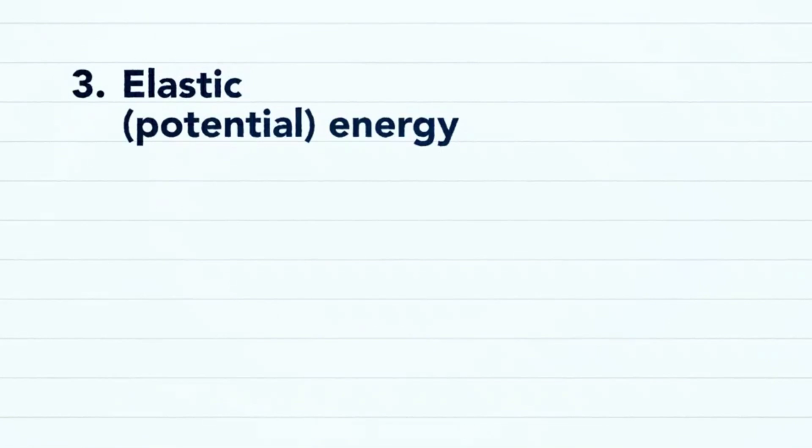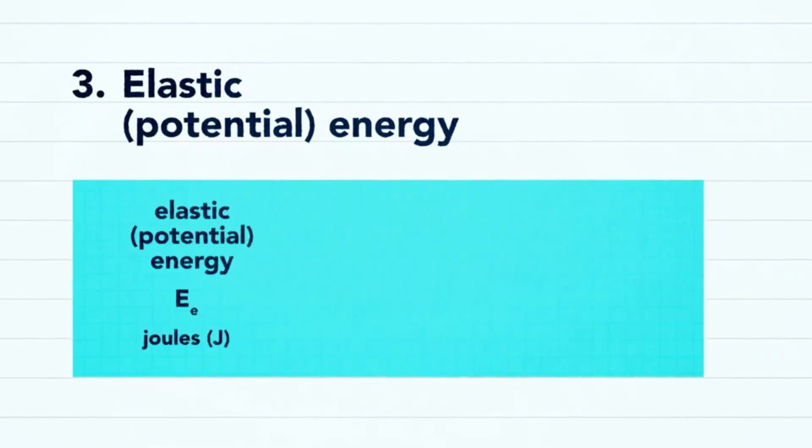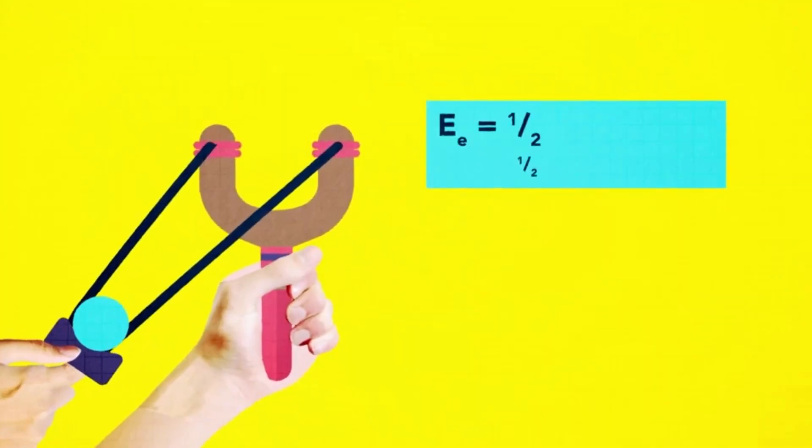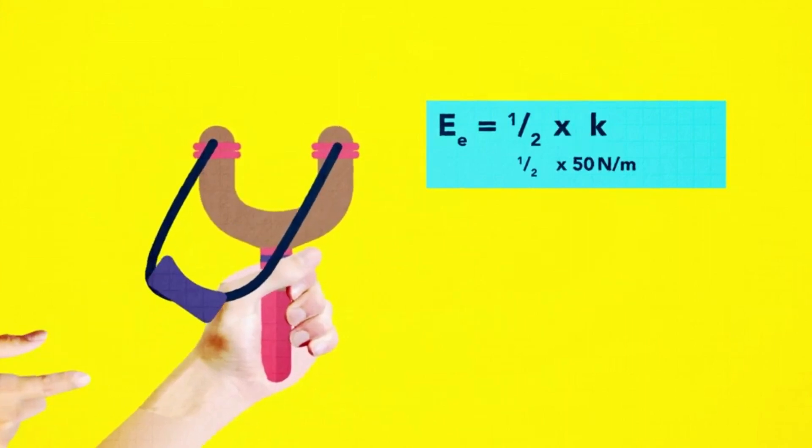The third allows us to calculate elastic potential energy. This equals half the force multiplied by the extension of the spring or half the spring constant multiplied by the square of the extension of the spring.